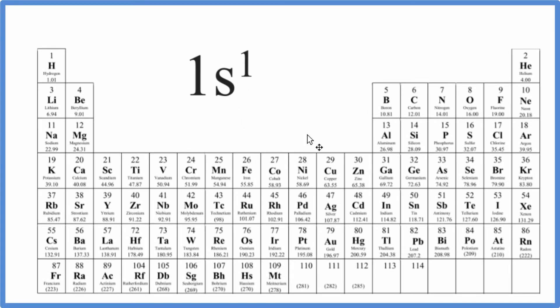In this video, we'll figure out which element on the periodic table has the electron configuration 1s1. There are two ways we can do this.